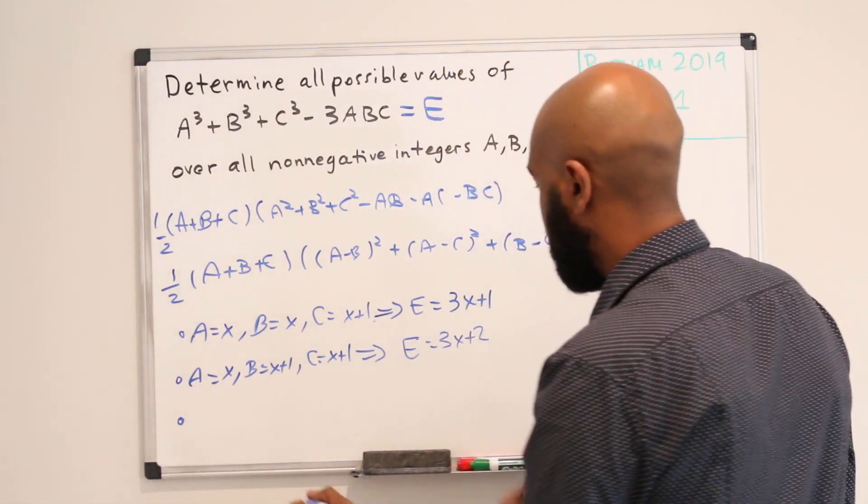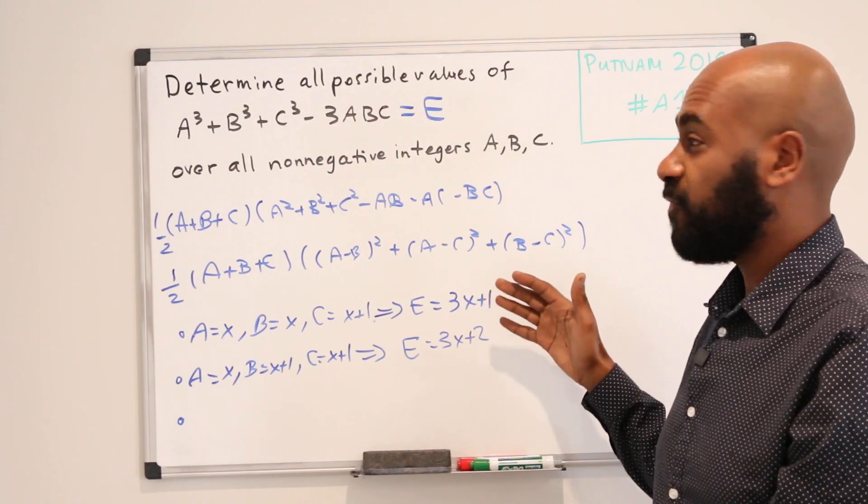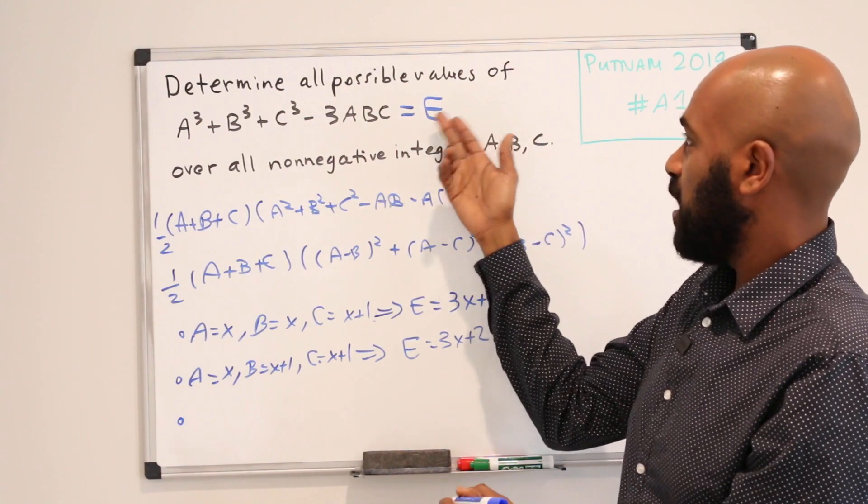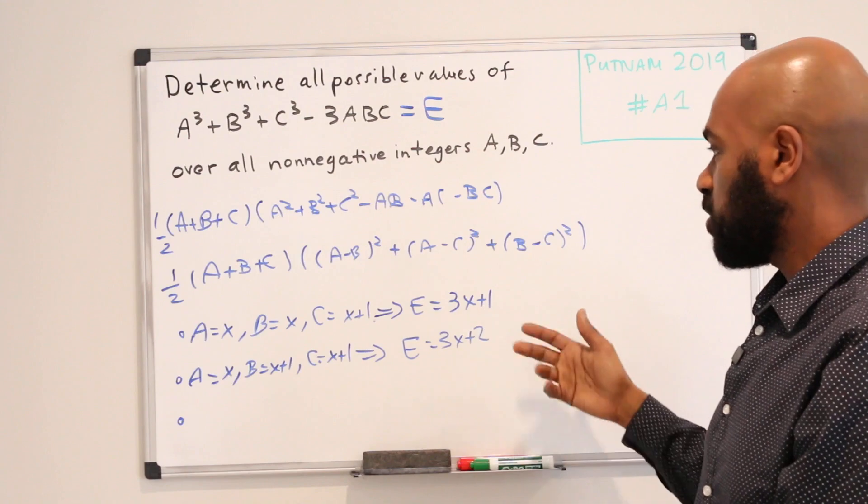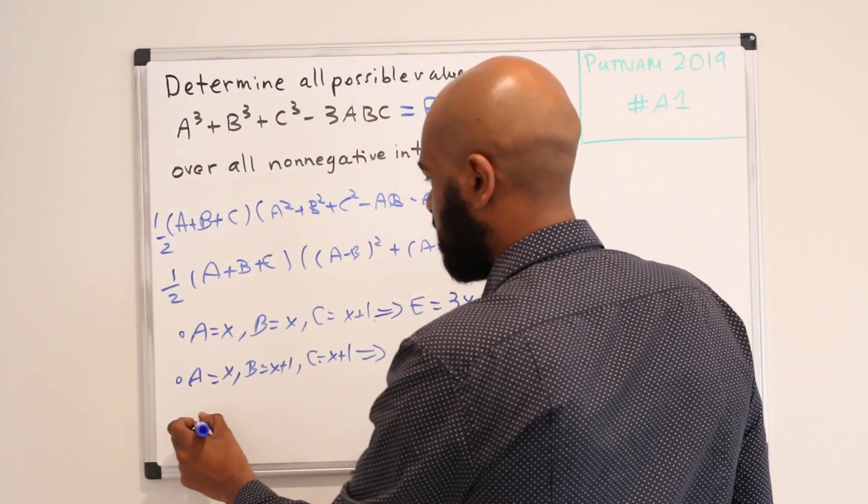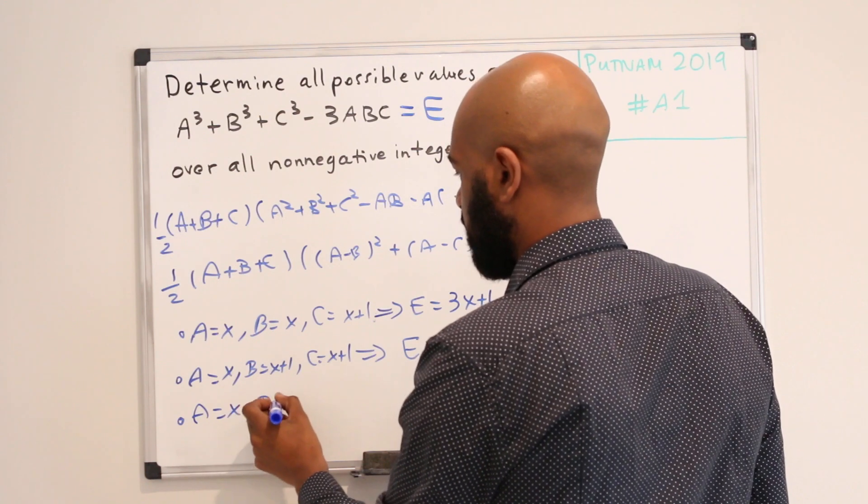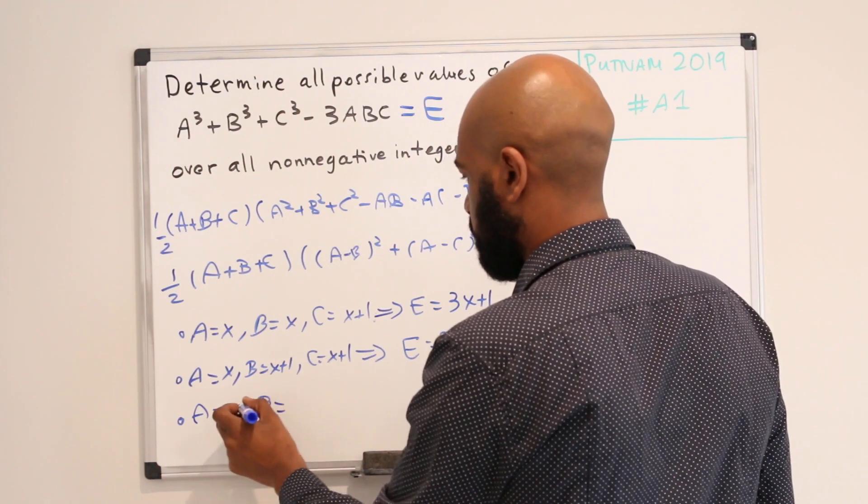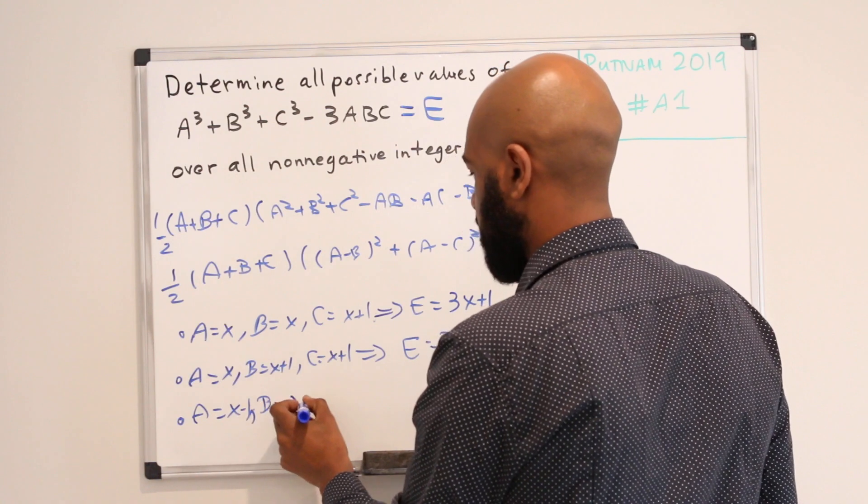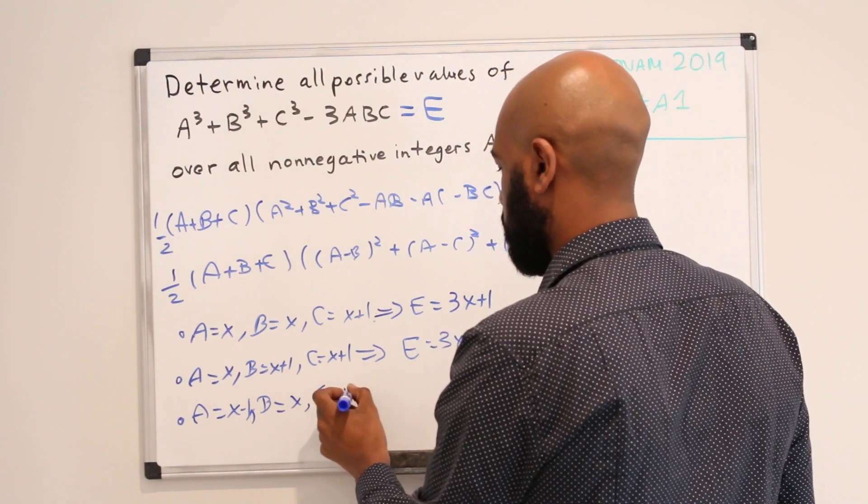Okay, so now the only things that we haven't figured out how to get as expressions for E are multiples of 3. We'll do the same thing again with integers that are close to each other. We'll let A be X - 1, B be X and C be X + 1.